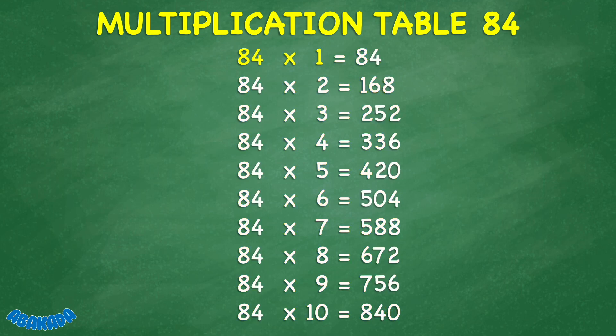84 times 1 equals 84. 84 times 2 equals 168. 84 times 3 equals 252. 84 times 4 equals 336. 84 times 5 equals 420. 84 times 6 equals 504. 84 times 7 equals 588.